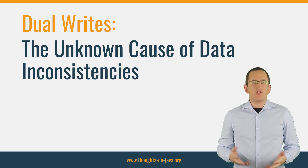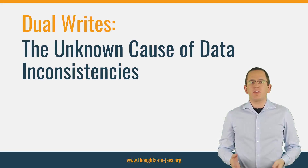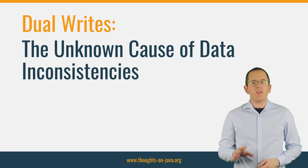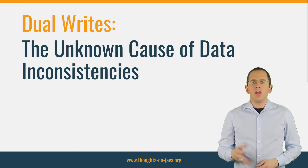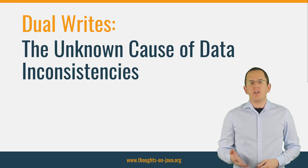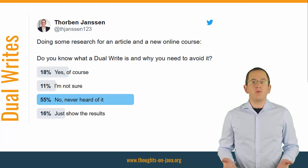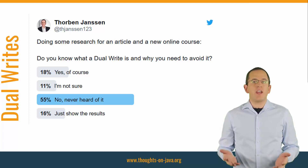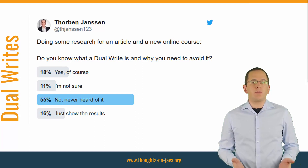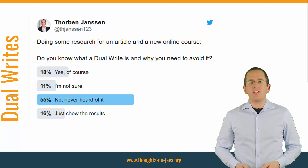Since a lot of new applications are built as a system of microservices, dual writes have become a widespread issue. They are one of the most common reasons for data inconsistencies. To make it even worse, a quick poll on Twitter proved that a lot of developers don't even know what a dual write is.